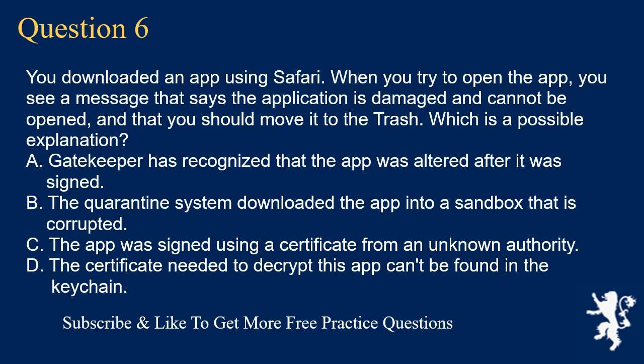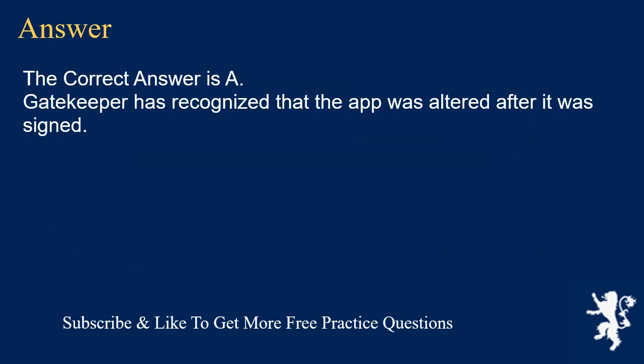Question 6. You downloaded an app using Safari. When you try to open the app, you see a message that says the application is damaged and cannot be opened, and that you should move it to the trash. Which is a possible explanation? A. Gatekeeper has recognized that the app was altered after it was signed. B. The quarantine system downloaded the app into a sandbox that is corrupted. C. The app was signed using a certificate from an unknown authority. D. The certificate needed to decrypt this app can't be found in the keychain. The correct answer is A: Gatekeeper has recognized that the app was altered after it was signed.